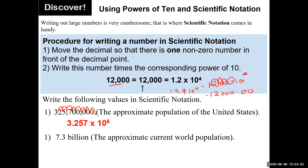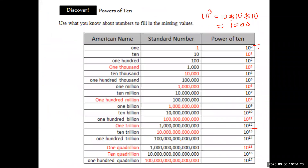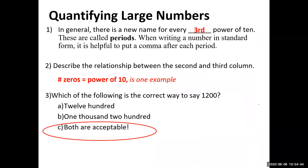For 7.3 billion — going back to the table, a billion is 10 to the 9 — is this already in scientific notation? It is, because the decimal point is already after the first non-zero digit. Referring to the table, 10 to the 9 is a billion. If you familiarize yourself with that table, it is good enough to handle these problems.